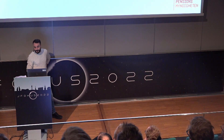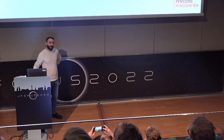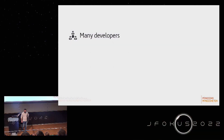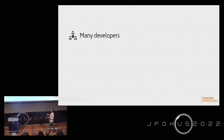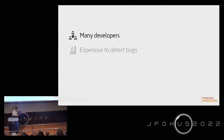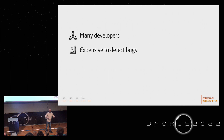Back to why do we have bugs? We are many developers, we do code changes all the time, we deliver new features. And even though we have testers to test our deliveries and approve them, there will be bugs — because we are human, we make mistakes, and they will pass through to production.